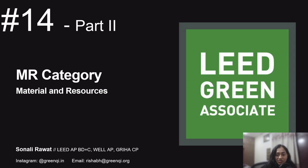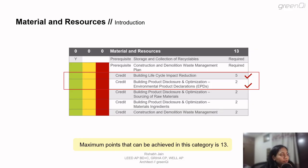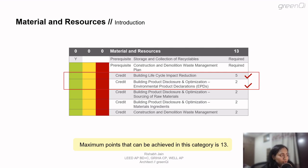This is part 2 of the materials and resources category. In part 1, we discussed two categories: Building Lifecycle Impact Reduction, where we talked about LCA and EPDs and the importance of an LCA in early design phases of a project. We also discussed Building Product Disclosures — specifically EPDs, Environmental Product Declarations, what they mean, and how many types of EPDs are available in the market.